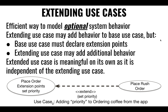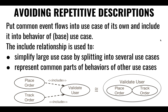Extending use cases allows us to describe use cases that are optional — we don't necessarily need to use them all the time, but they're available from a particular use case. For instance, if you're placing a rush order, you can describe some additional place order use cases that you could use optionally. Whereas include describes dependencies between use cases: I cannot apply a particular use case until some other use case has successfully completed. I cannot place the order or track the order unless validate user has occurred. So include establishes that kind of dependency relationship.